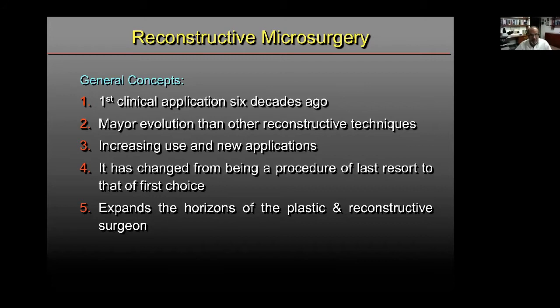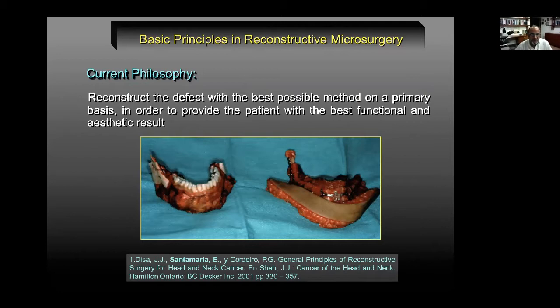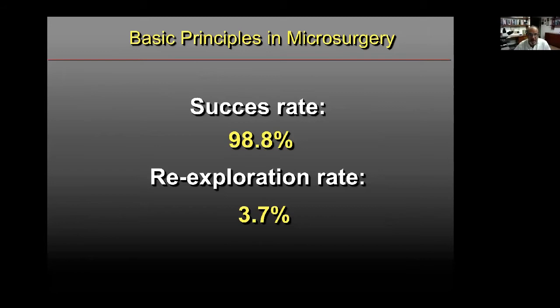The classical reconstructive ladder used to say that free flaps were considered the last resource, but with the modern reconstructive elevator this has changed, and free flaps can now be the first choice. Current philosophy says to reconstruct the defect with the best possible method on a primary basis to provide the patient with the best functional and aesthetic results. Cutting-edge reconstructive microsurgery demands we provide safe, reliable free flaps with customized designs, minimal donor site morbidity, and ideally in one stage.